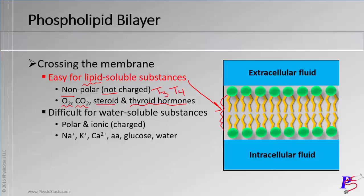It is difficult for water-soluble substances to get across. We'll talk about these in more detail in the next video — polar and ionic or charged substances, like sodium (Na), potassium (K+), calcium, amino acids, sugar, glucose, and water.